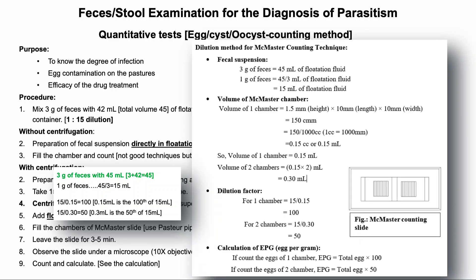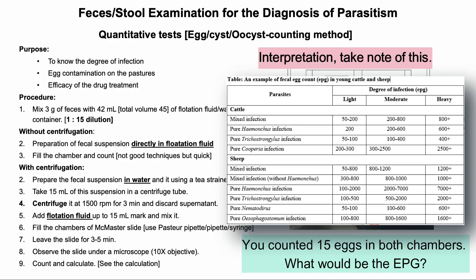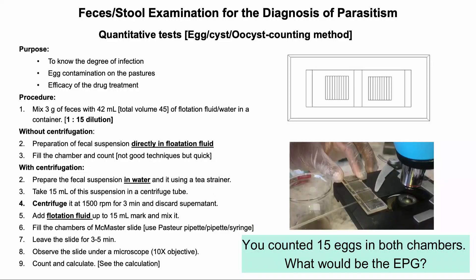Since 0.15 ml is one-hundredth of 15 ml, and 0.30 ml is one-fiftieth of 15 ml, multiply the number of eggs, cysts, or oocysts by 100 for one chamber, or by 50 for both chambers combined. In the second scenario with centrifugation, the sample was already in 15 ml with 1 gram of feces, so the dilution factor is the same: multiply by 100 for one chamber or by 50 for both chambers. For example, if you counted 15 eggs in both chambers, what would be the eggs per gram of feces? Write it in the comment section below.